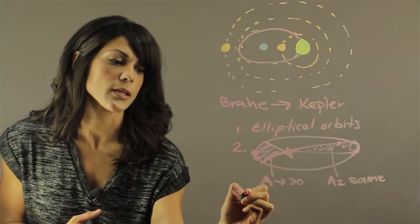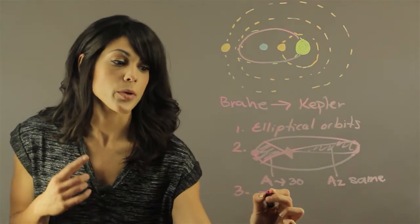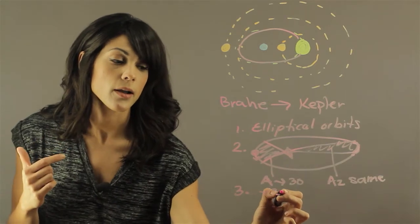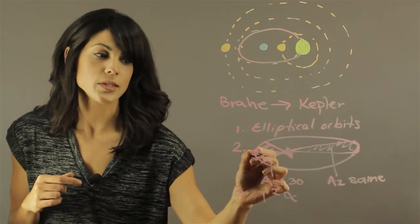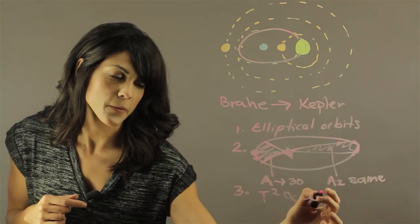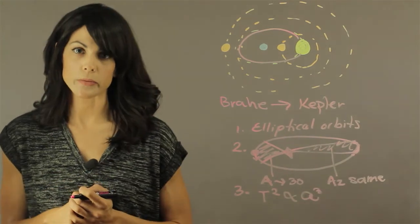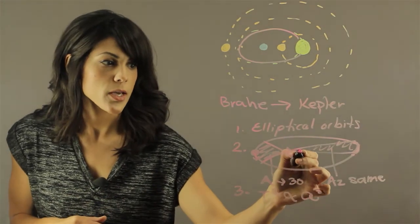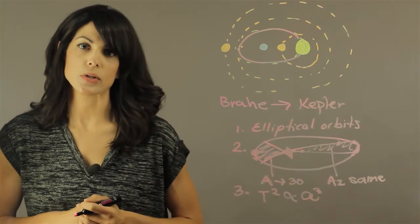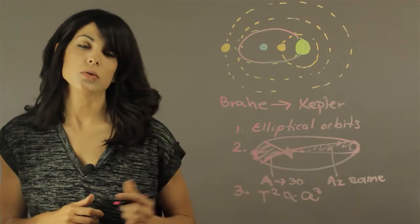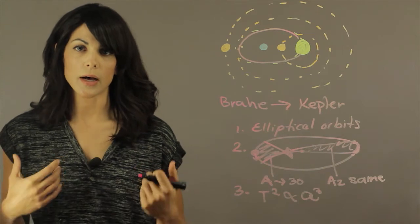The third law is that he realized the period—the orbital period squared—is proportional to the distance to the semi-major axis cubed. So if you take an elliptical orbit and look at the distance of the semi-major axis, this is actually what dictates the orbital period.